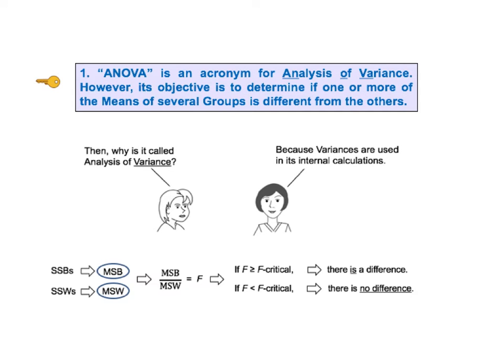Second, the internal calculations in ANOVA make use of variances. The diagram at the bottom of this slide shows the flow of the calculations in ANOVA, which is explained in detail in the ANOVA part two video. The variances are the terms MSB and MSW — mean sums of squares calculated from the groups of data.